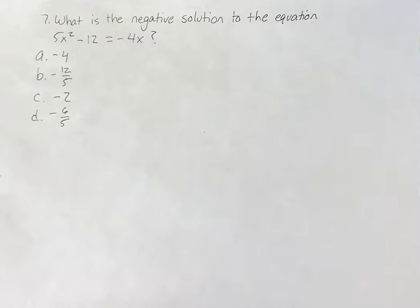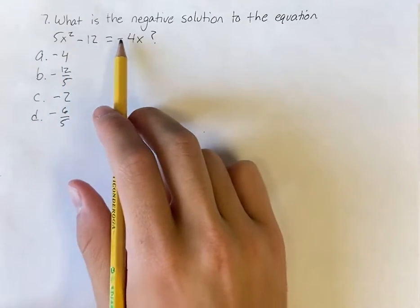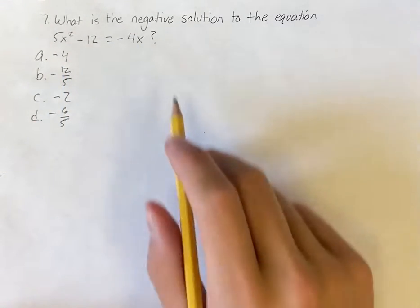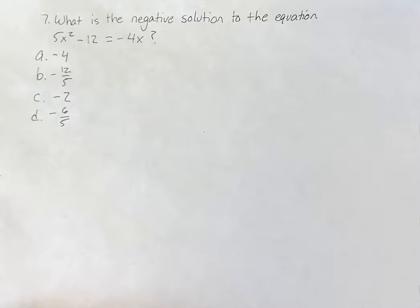Hello, and welcome back to another video. In this problem, we're looking at the equation 5x squared minus 12 is equal to negative 4x. We're asked, what is the negative solution to this equation?